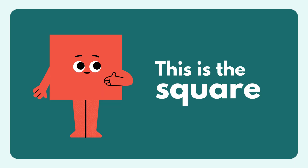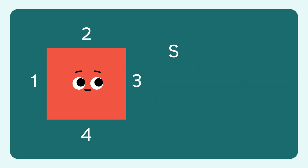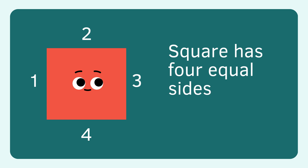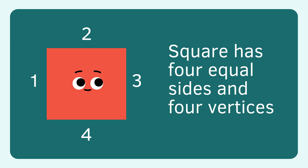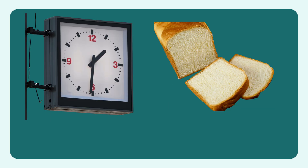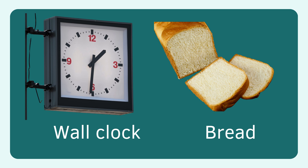Square. Square has four equal sides and four vertices. Examples include a wall clock and bread.